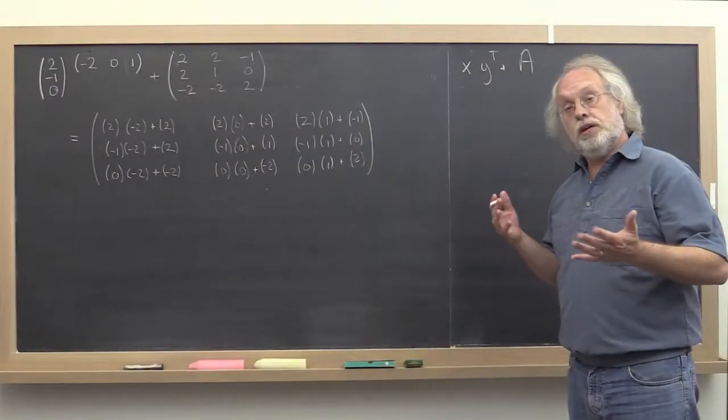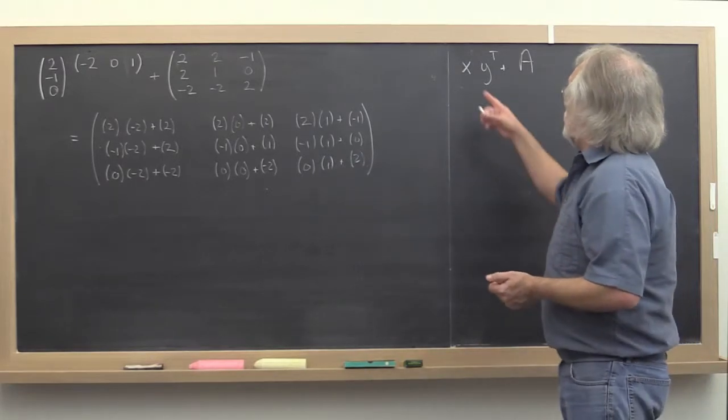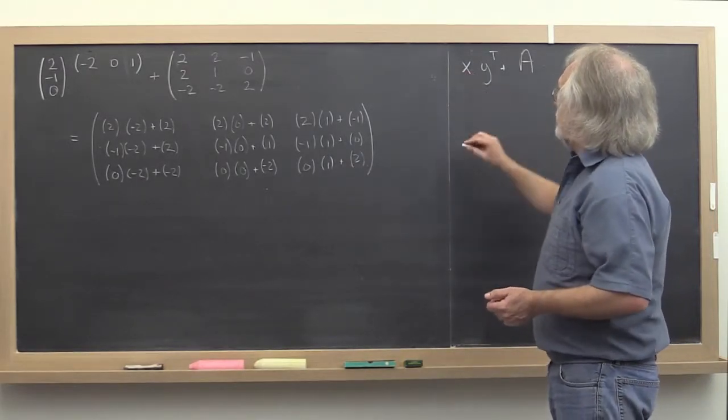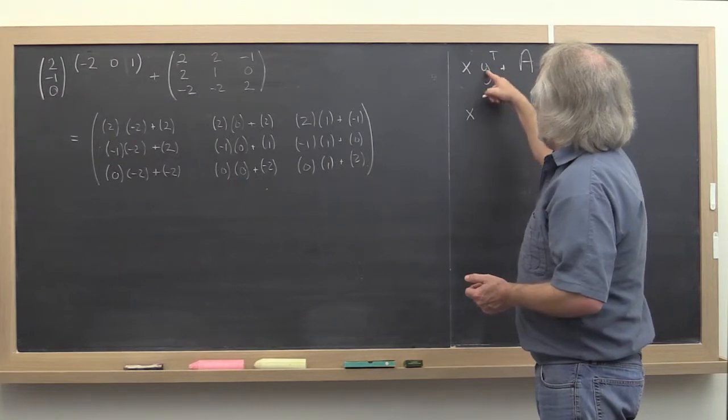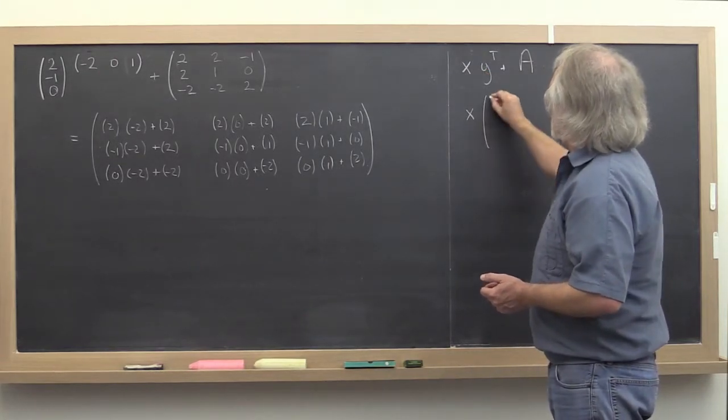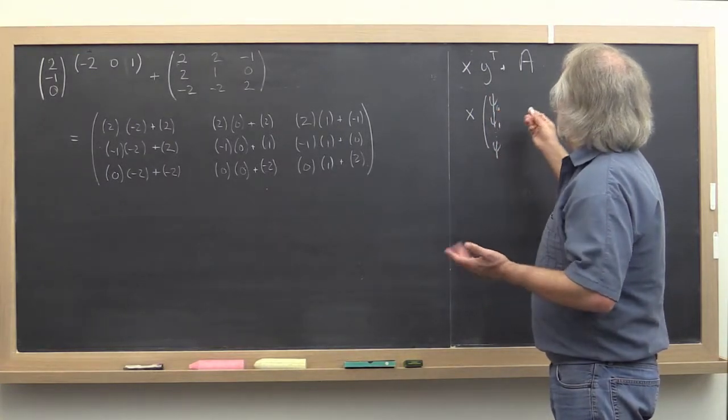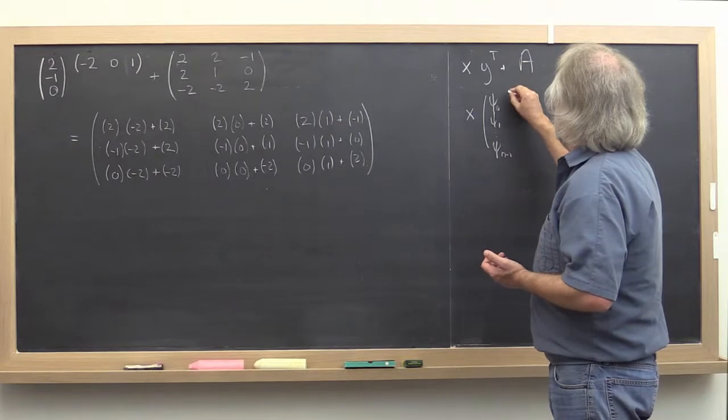Now you've gained quite a bit of experience with slicing and dicing. Let's take vector x and leave it alone, and take vector y and partition it into psi 0, psi 1, through psi n minus 1, transpose.